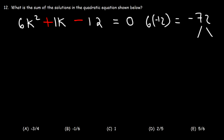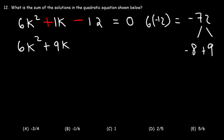Two numbers that multiply to 72 are 8 and 9, because they differ by 1. One of them has to be positive and the other negative. Since the middle term is positive, the larger number has to be positive — so it's negative 8 and positive 9. We're going to replace the middle term 1k with 9k and negative 8k, since 9k minus 8k is 1k.